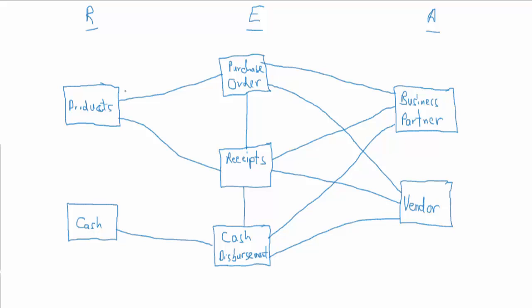A purchase order is always going to include one up to many products. But a product may never be ordered, or may be ordered many times across many purchase orders. Also, a purchase order is always going to be associated with one business partner — each purchase order is made by one business partner only, although business partners may make zero or many purchase orders. The same goes for suppliers — each purchase will typically be associated with one and only one vendor.